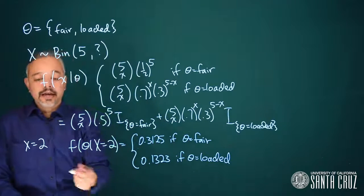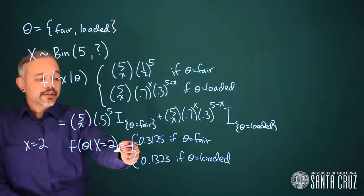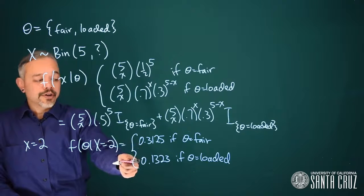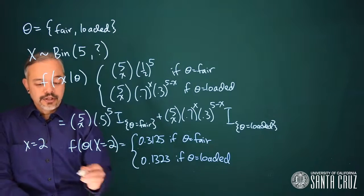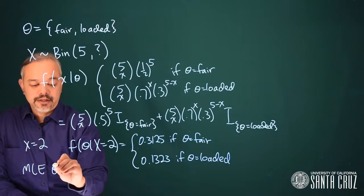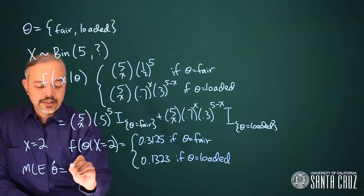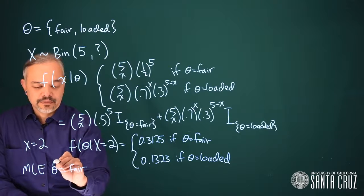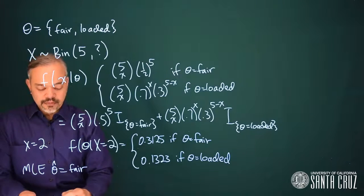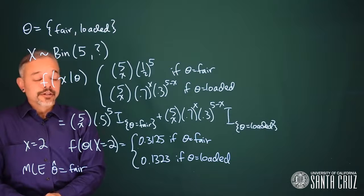So we see that having observed two heads, the likelihood is higher for theta equals fair than for theta equals loaded. Thus, we can say the maximum likelihood estimate, theta hat, is that this is a fair coin. That's our maximum likelihood estimate.